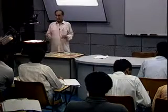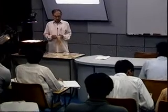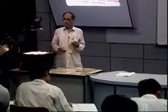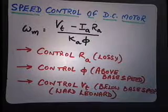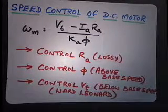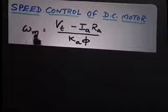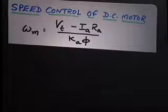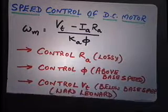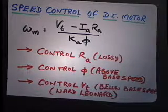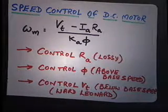The next important topic is speed control of DC motors. The simple expression is: speed equals (VT minus Ia·Ra) divided by K·Φ. This means you can control VT, you can control Ra, or you can control Φ. These are the three methods of speed control: control Ra (resistance control), control Φ (flux control), control VT (voltage control).